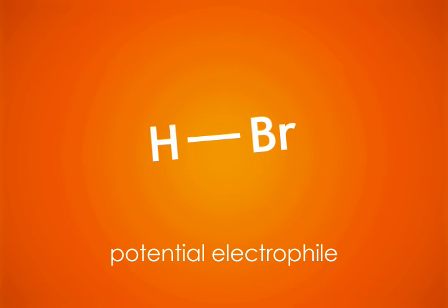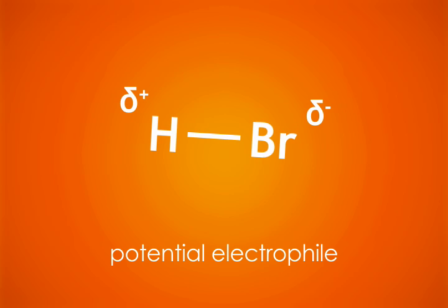One reactant is a potential electrophile. Because the bromine atom is electronegative and attracts electrons, it causes a partial positive charge on the hydrogen atom to which it is bonded. The hydrogen is thus electrophilic.